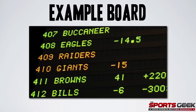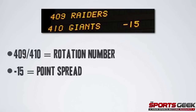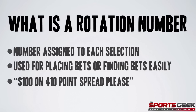Here's an example of an odds board that you might see during the NFL season at a Las Vegas sports book. The first thing you'll see is the numbers 409 and 410 on the left-hand side — these are the rotation numbers, which I'll talk about in a second. Next you see the team names, the Raiders and the Giants, and then the negative 15, which is the point spread. Because it's beside the Giants, that means the Giants are favored by 15 points.